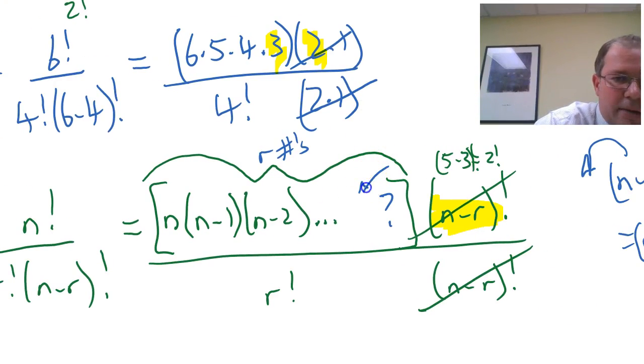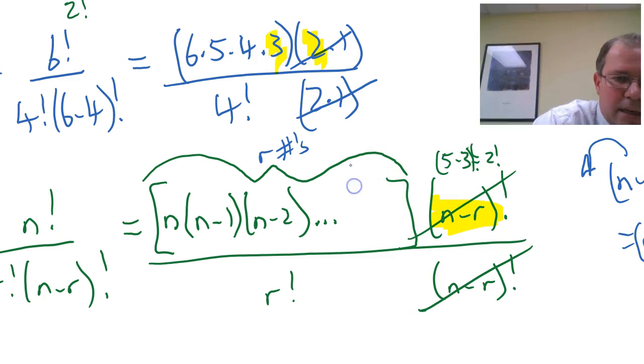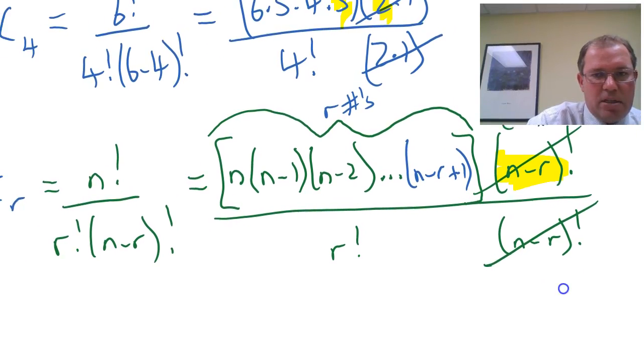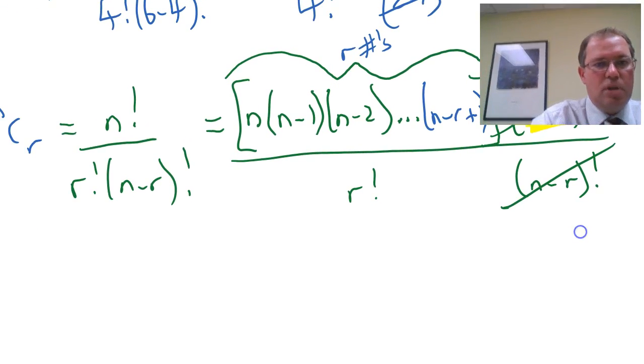So, this number that I have to put in here is going to be n minus r plus 1. It's giving me the r numbers in there. And then, I've generated a new formula for n choose r.